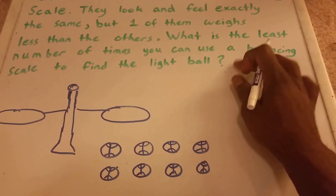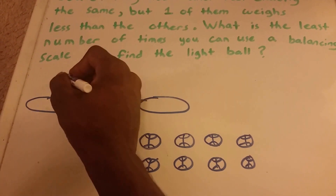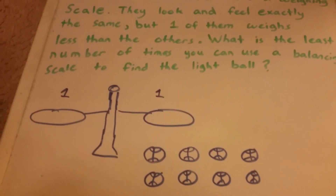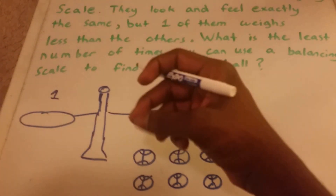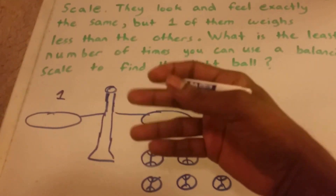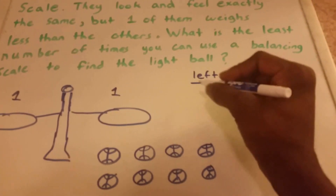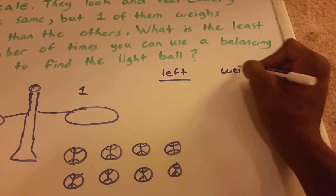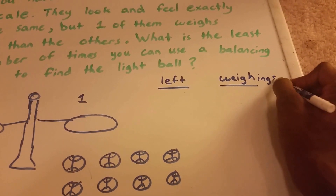I'm going to show this. Most people usually will come up with a solution like this, where you put one ball on each side and one of them is going to weigh less than the other. Suppose we pick the lightest ball last — how many times do we have to weigh? I'm going to write a column called 'left' for the number of balls we have left after weighing, and how many times we use the scale.